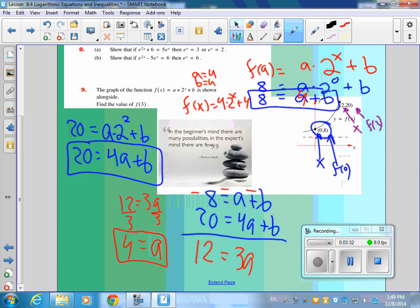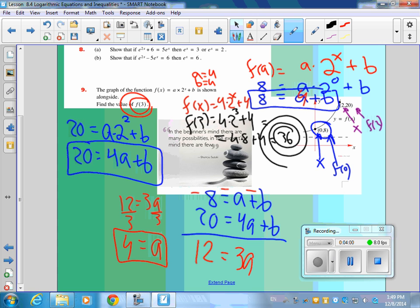And so now what is the question now? We did all that work. We haven't even answered the question. f of 3, right? So then we'll do that. f of 3 equals 4 times 2 to the 3rd plus 4 equals 4 times 8 plus 4. 32 plus 4 is 36. Answer should be 36. Anybody get that? Get 36? Nice.